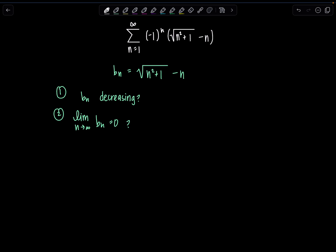So first, let's work on decreasing. It might be difficult to look at B sub n and determine whether B sub n plus 1 is less than B sub n by definition. So I'm going to rewrite it as a function and look at the derivative. Consider f of x, which is the square root of x squared plus 1 minus x.